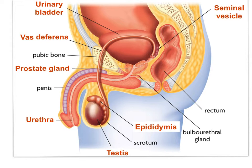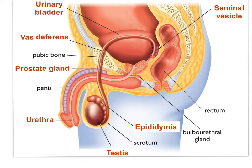Here is an image displaying the reproductive organs in the male — a review from Topic 6. Proceeding in an order that follows from sperm formation to sperm release: sperm are formed within the testes, within tubules known as seminiferous tubules. The sperm, once formed, move to the epididymis where they mature. Once mature, sperm are moved during ejaculation along the vas deferens, past the seminal vesicle, which releases alkaline fluids into the ejaculate. Then the sperm travel through the prostate gland, which also releases alkaline fluids. Within the prostate, the vas deferens joins the urethra — a common duct for both ejaculate and urine.